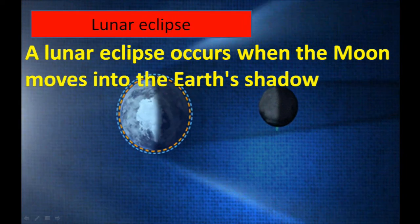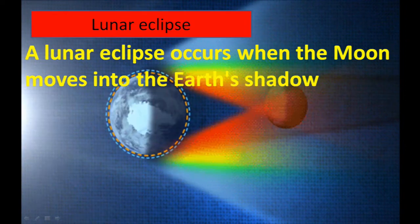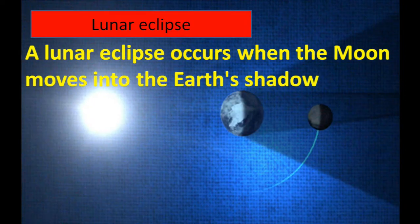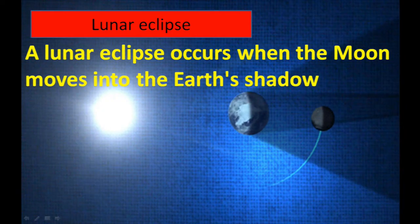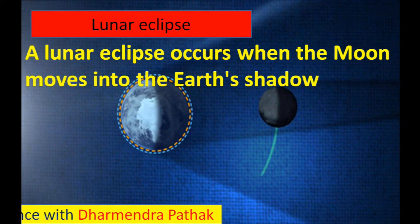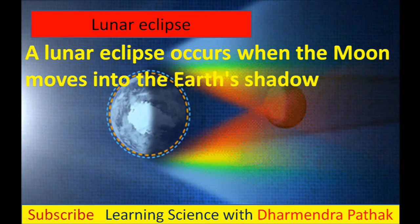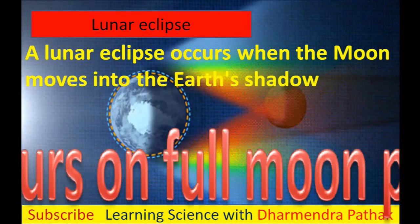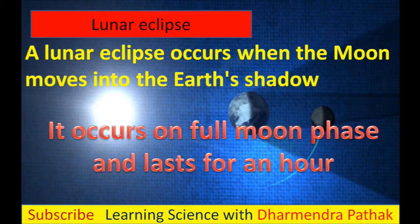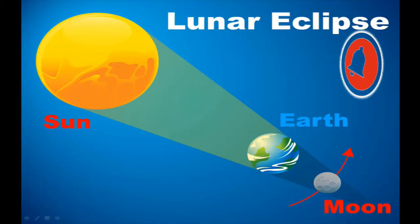Lunar Eclipse: A lunar eclipse occurs when the moon moves into the earth's shadow, or the earth comes between the moon and the sun. The shadow of the earth is formed on the surface of the moon. It occurs on the full moon phase and lasts for about an hour. A lunar eclipse occurs due to blockage of sunlight by the earth, and the shadow of the earth forms on the surface of the moon. It lasts longer because the movement speed of the earth is slower than that of the moon.